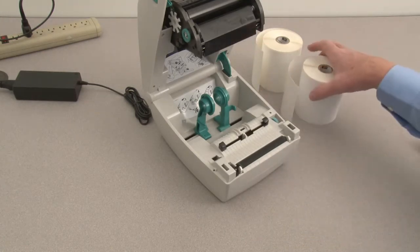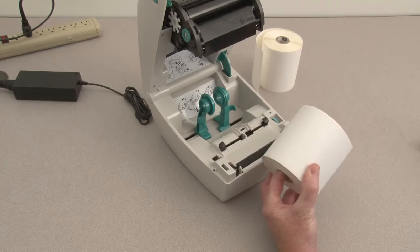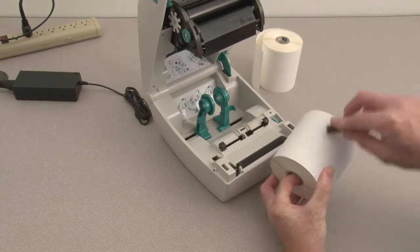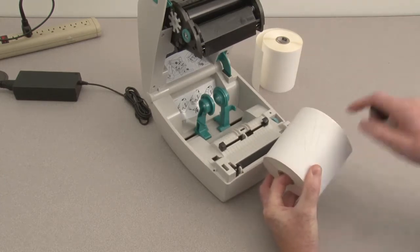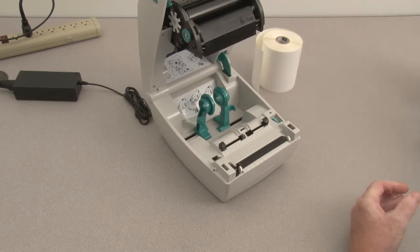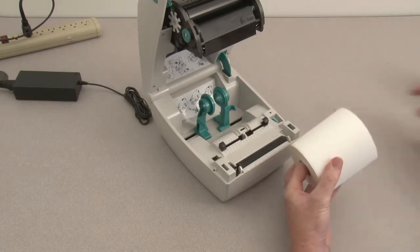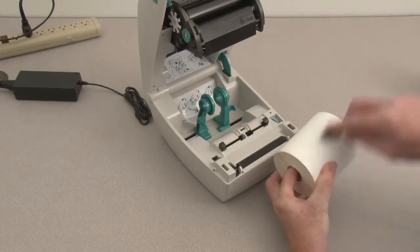Determine the media type by using the scratch test. Direct thermal media will show a dark streak, no ribbon needed. No streak means you have thermal transfer media and you will need a ribbon.